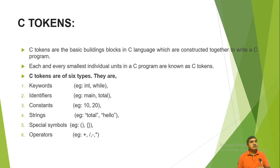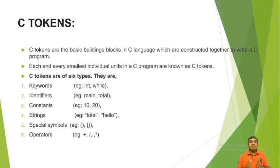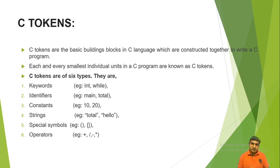What is a C token? C tokens are the basic building blocks in C language which are constructed together to write a C program. When we write a C program, we must know about C tokens. There are six C tokens: the first is keyword, for example 'int' or 'while'. There are generally 36 keywords which are reserved words with predefined meaning in the compiler.